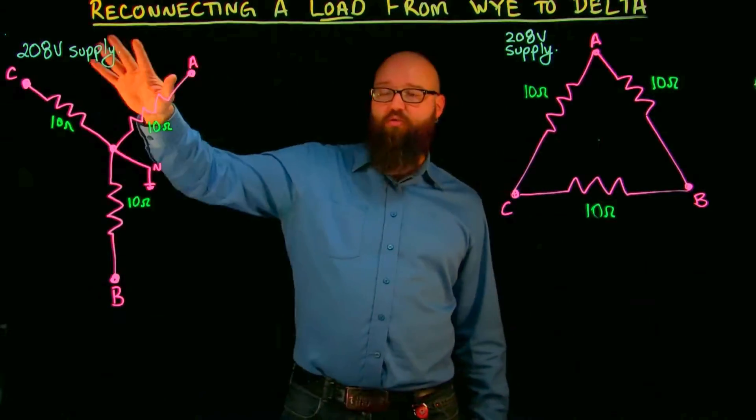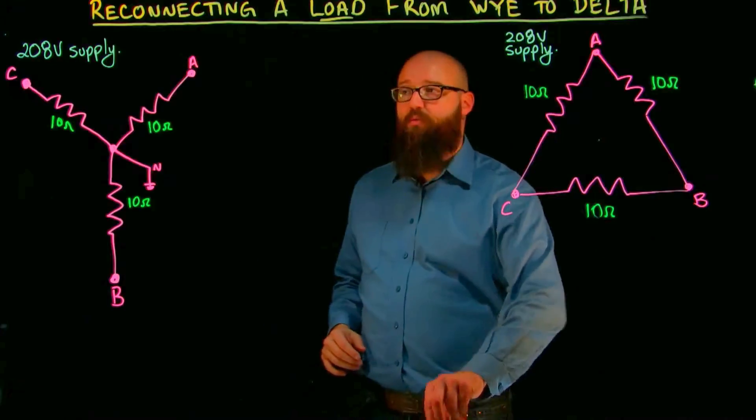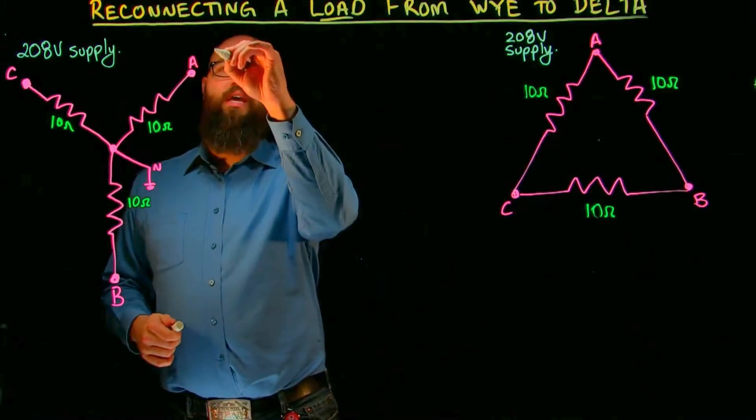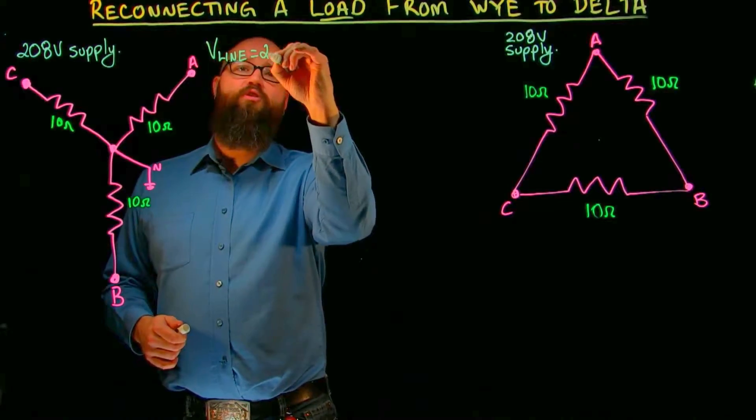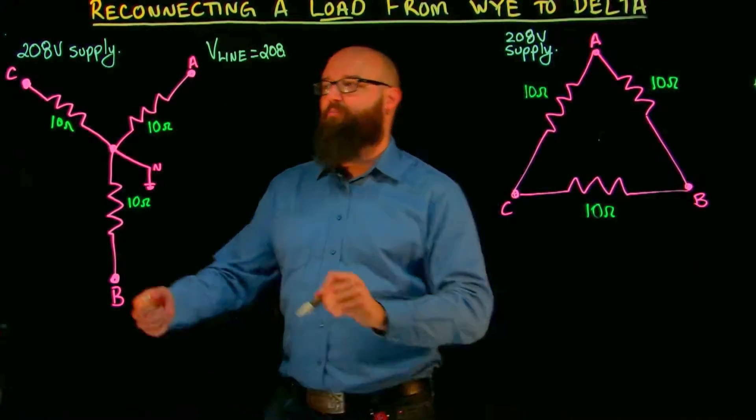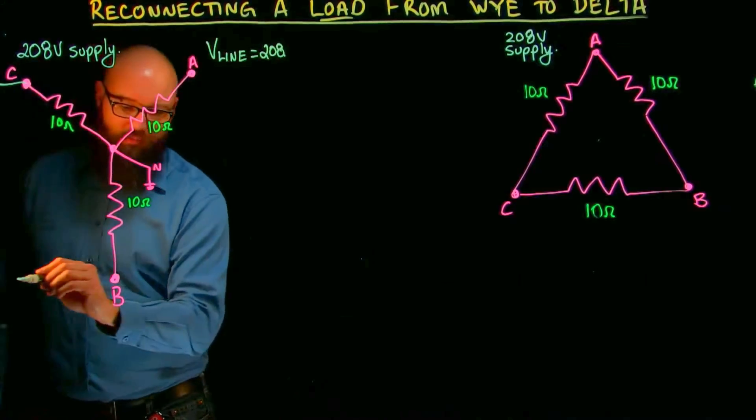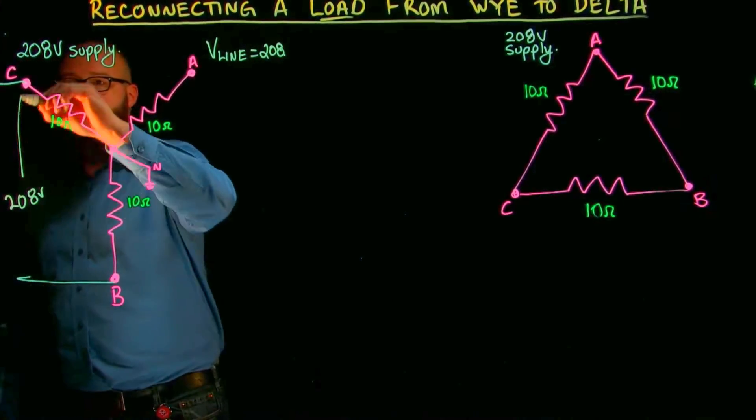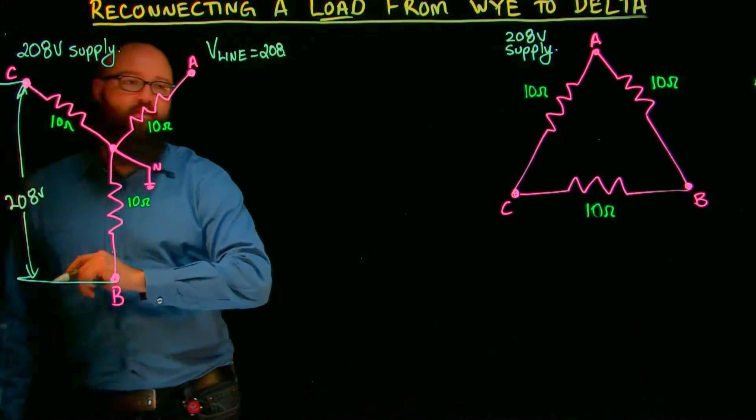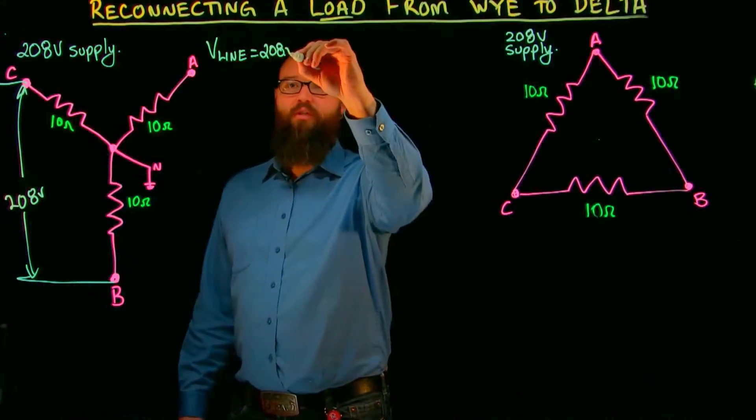So first thing, we have a 208 volt supply, so we want to plot this right here. We're going to say that our voltage of our line is 208 volts. If I was to take a voltmeter and apply, well first of all if we apply our voltage, I would have 208 volts line to line, which gives us our 208 volts line voltage.